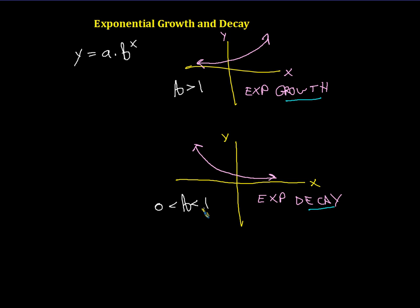And hopefully you recall this notation. This is a compound inequality, and it's an and compound inequality. b is all the values in between 0 and 1. And so this is kind of everything you ever want to know about exponential growth and decay.